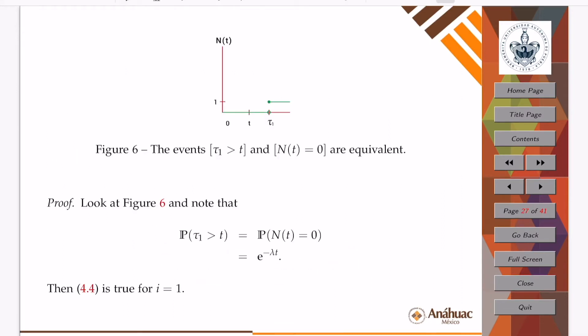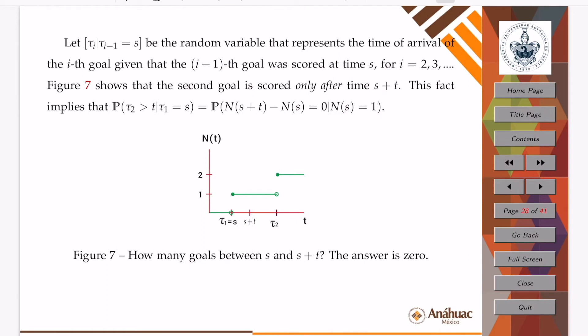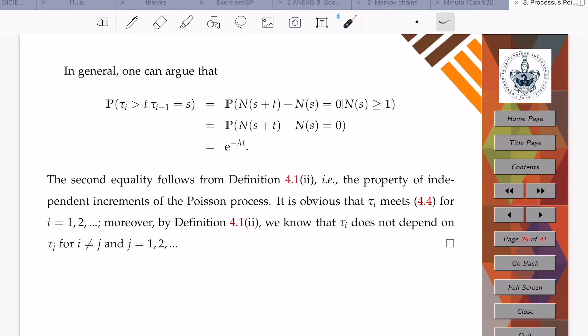If we define tau 1 as the time elapsed until the first goal and tau i the time elapsed between the i-1th goal and the next one, we'll have that each of the members of this sequence of times of arrival is distributed according to an exponential random variable. Geometrically, this looks like this: at time 0, we're just with 0 goals, and at a random time tau 1, we go from 0 goals to 1 goal and stay there for some time.